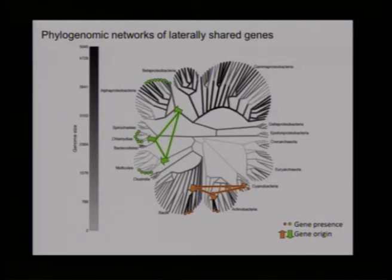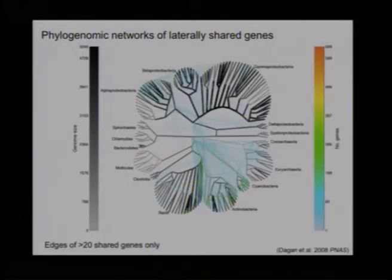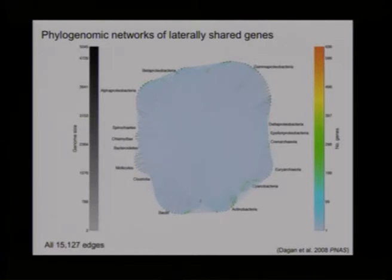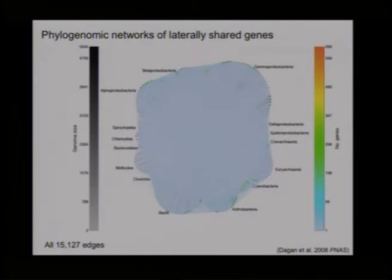Applying this to a dataset of 190 genomes, we can reconstruct the real edges. We show edges of more than 20 shared genes, then all edges of 5 shared genes or more, and finally all lateral gene transfer edges superimposed upon the phylogenetic tree. This might look like a blob, but it is the real picture of how prokaryotic species evolve — a lot by vertical inheritance, but also a lot by lateral gene transfer.